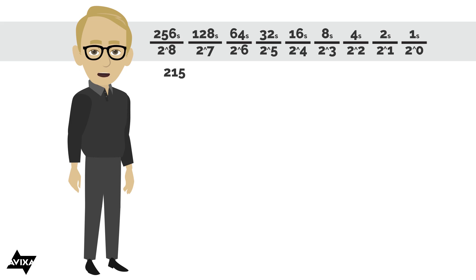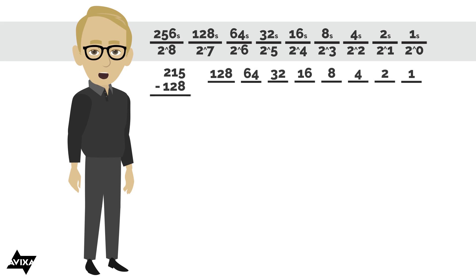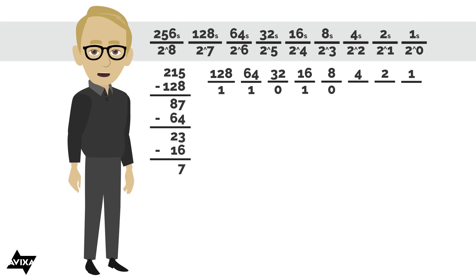So let's take that 215 in decimal and convert this to binary. So we have 215. 256 will not fit into 215, but 128 will. So I can put a 1 there to represent the 128's place. I take 128 away from 215, the remainder is 87. Well, 64 fits into 87, so I can use a 64. Take 64 away from 87, that leaves me 23. 32 will not fit into 23, so I would put a 0 in the 32's place. But 16 will fit, so I can put 1 in the 16's place. Take 16 away from 23, that gives me 7. Well, 8 is too large, so I can't use 8, but I can use 4. Take 4 away from 7, the remainder there is 3.